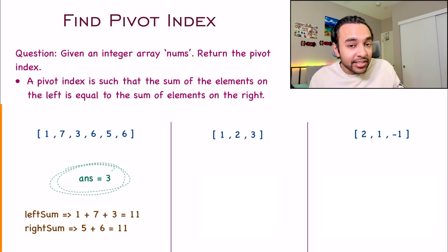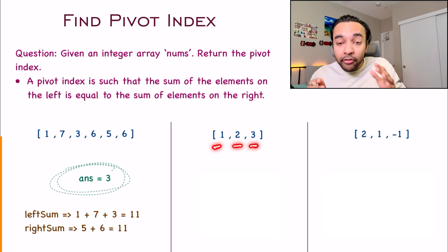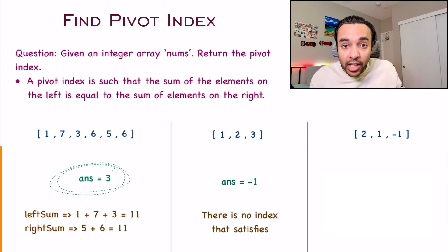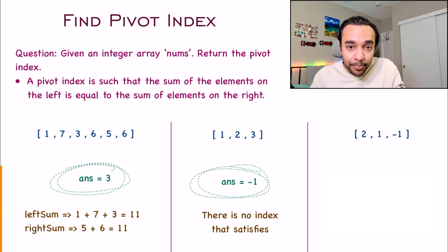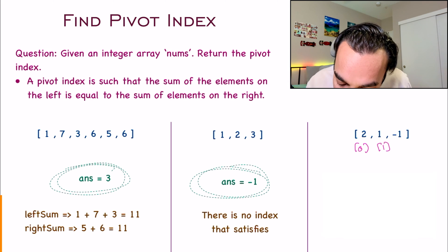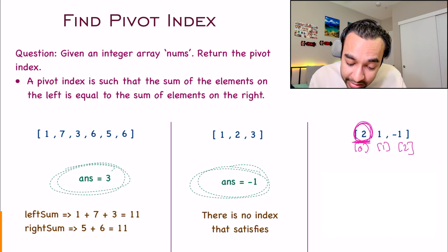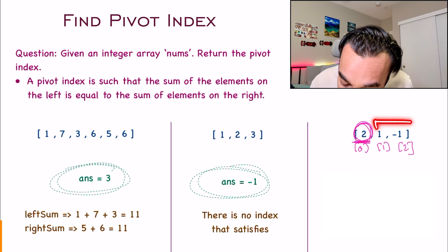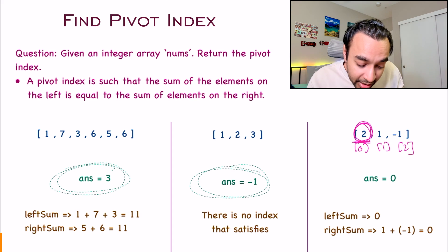Now, there can also be some edge cases, and for those scenarios this problem tells you a specific condition. For example, in this particular test case, you don't have any pivot index — there is no index where the sum of elements on the left equals the sum of elements on the right. In such a scenario, you need to return minus 1 as your answer. Also, the pivot index can lie anywhere in the array. When I look at this third test case with zero-based indexing — indices 0, 1, and 2 — if you look at index 0, the sum of elements on the left is 0 because there are no elements, and the sum of elements on the right is also 0 because 1 plus minus 1 equals 0. So in this test case, 0 will be your answer — the element at index 0 is your pivot.